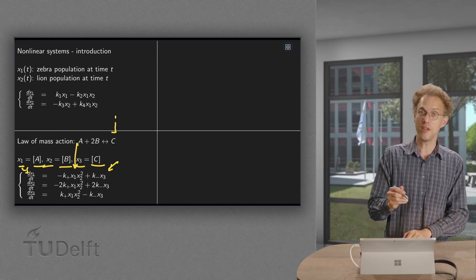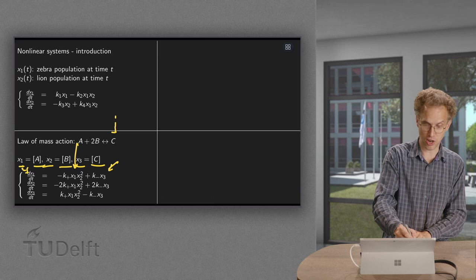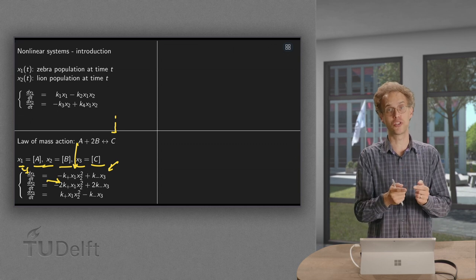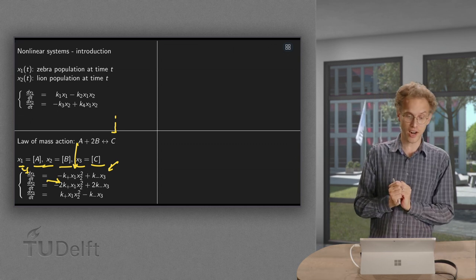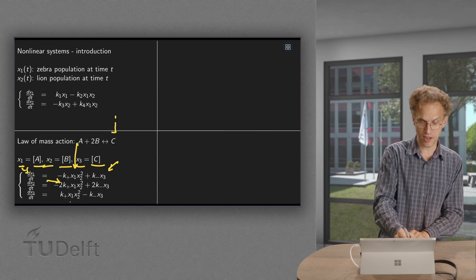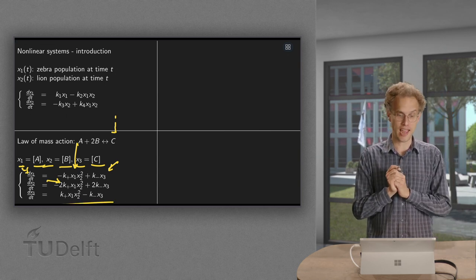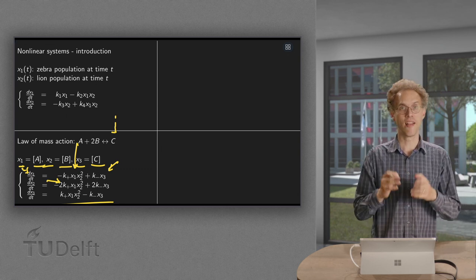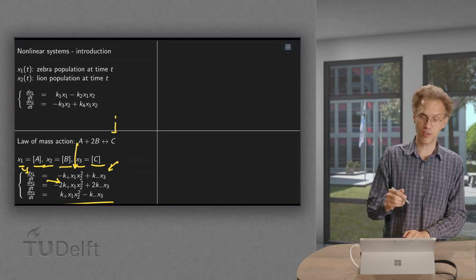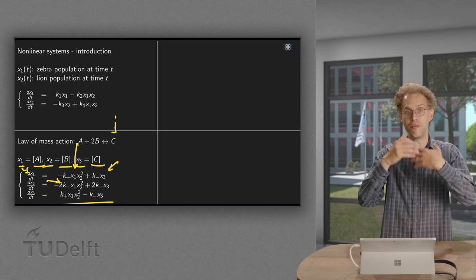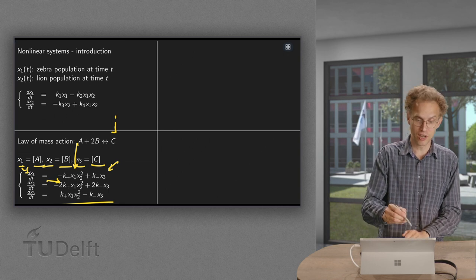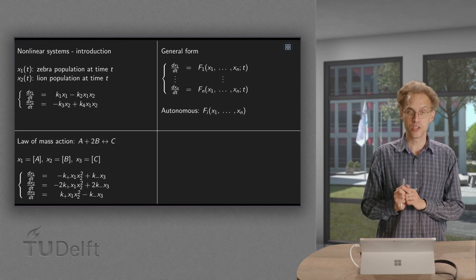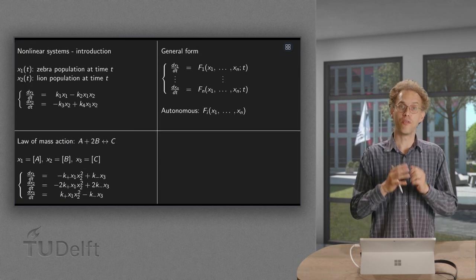Similarly for B. Only this goes twice as hard, of course, because every reaction either generates 2B if you go backwards or costs 2B if you go to the right. And C, the term is just the opposite of the term for A, because every time we generate C, we lose one A. So there we have an example of a system of differential equations for a very straightforward reaction which already contains all kinds of nonlinearities.